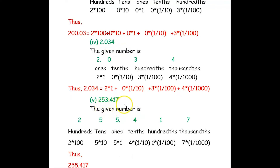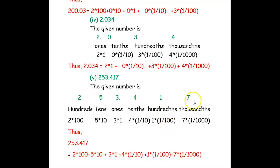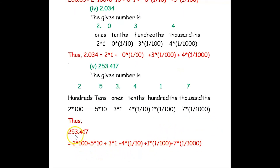The next example is 253.417. We write 253.417. The integer part has ones, tens, and hundreds; the decimal part has tenths, hundredths, and thousandths. So: 2 hundreds, 5 tens, 3 ones, 4 tenths, 1 hundredth, 7 thousandths. The expanded form is: 2 × 100 + 5 × 10 + 3 × 1 + 4 × (1/10) + 1 × (1/100) + 7 × (1/1000). This is the expanded form.